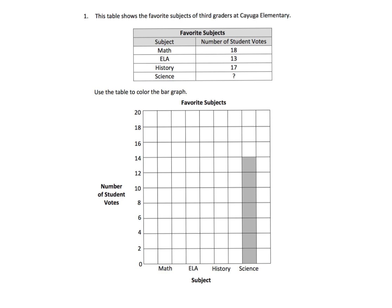The subjects are on the bottom with a label that says 'Subjects,' and the number of students goes up along the side. We always want students to take a moment to look at the graph and see how it is arranged, because sometimes the bars might be going horizontally, but in this case they are going vertically.